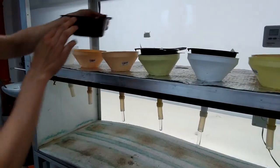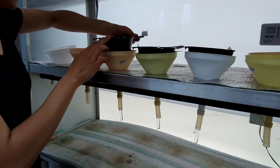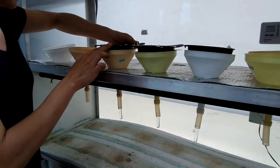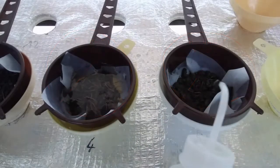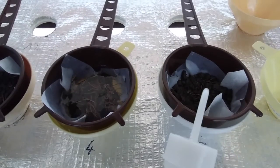Gently place the sieves with soil and litter on top of the funnels. The substrate should be fully soaked but not submerged completely. Add more water if needed but not too much.